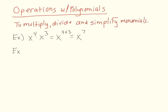Now, what about if you have a variable being raised to an exponent, and that's being raised to another exponent? Well, these get multiplied. So we have y raised to the 4 times 3, and that equals 12.